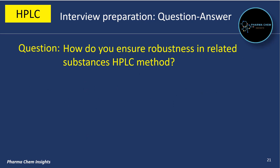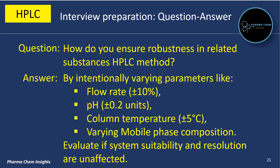Next question: how do you ensure robustness in a related substances HPLC method? Robustness is ensured by intentionally varying parameters like flow rate (±10%), pH (±0.2 units), column temperature (±5°C), and mobile phase composition. Evaluate whether system suitability and resolution are unaffected.